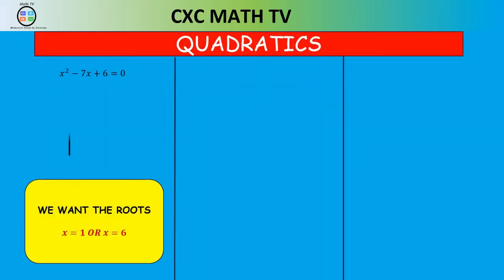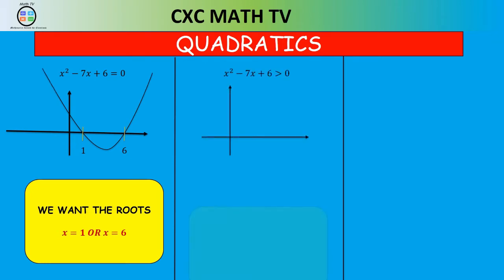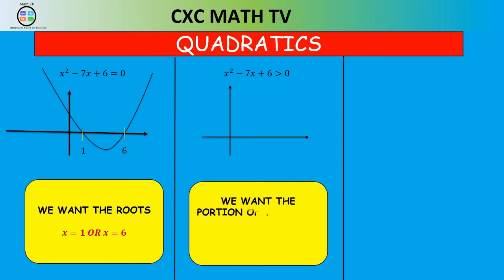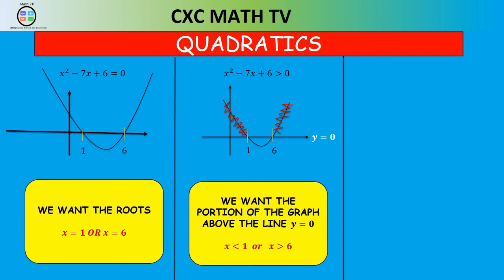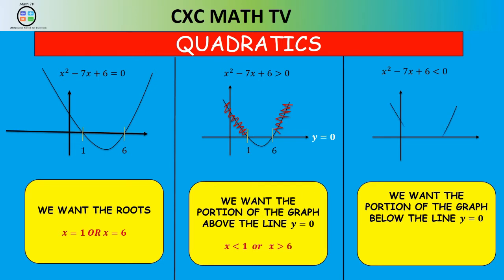For the equation equal to 0, we want the roots: x = 1 and x = 6. For the second case, x² - 7x + 6 > 0, we want the portion of the graph above the line y = 0. The solution region is x < 1 or x > 6. When solving x² - 7x + 6 < 0, we want the portion below y = 0, which is when x is between 1 and 6.